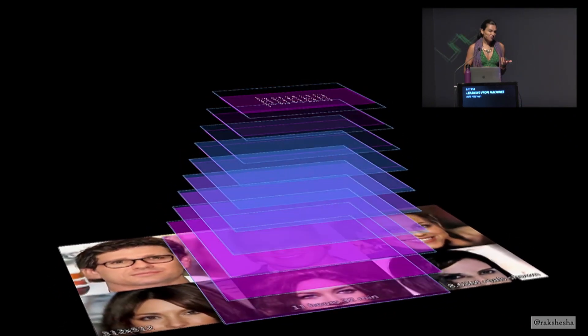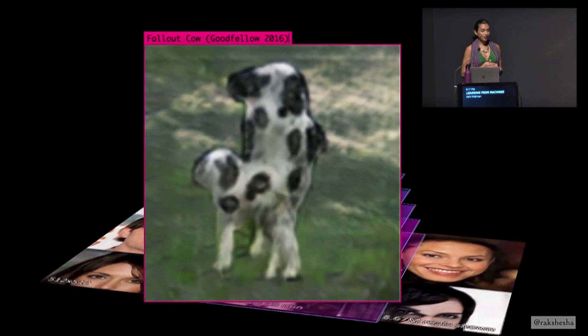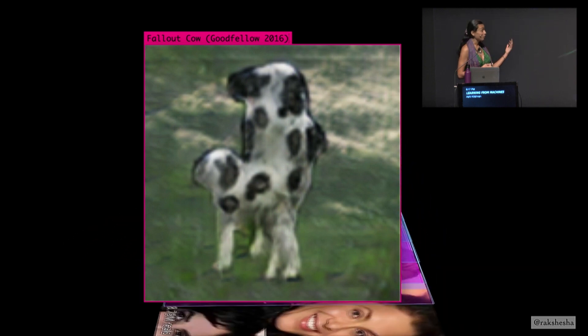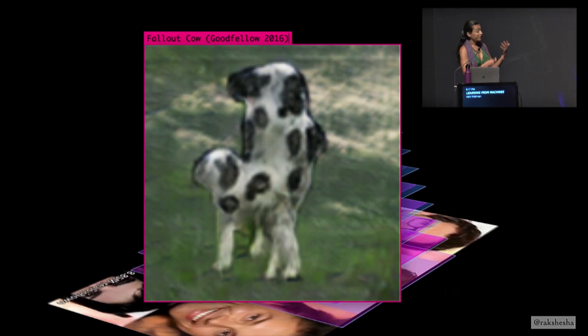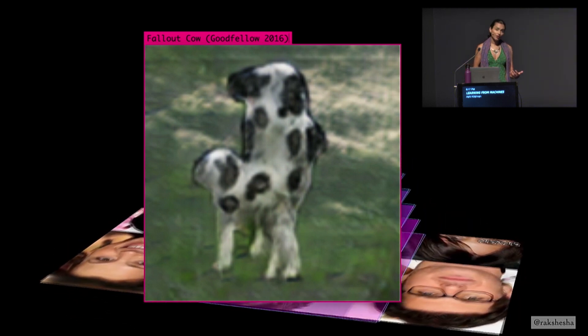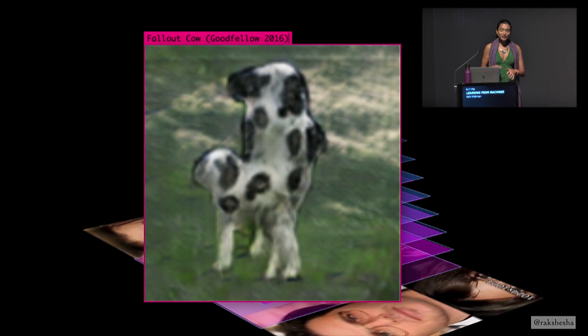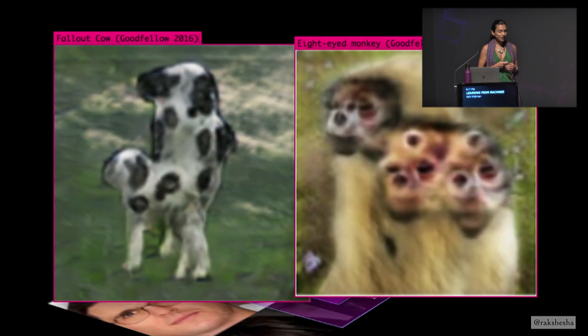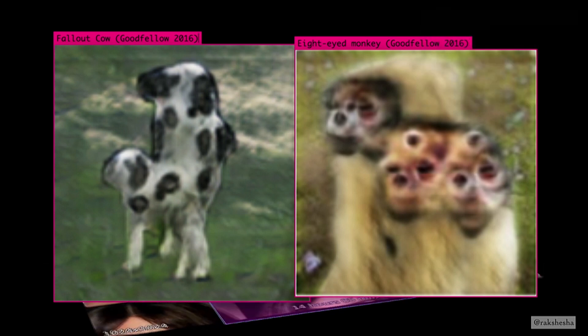GANs are not particularly great at global structure. This is a fallout cow. It is a cow with an extra body, just as you may have spent a night walking through a house that is your house, but with many extra rooms. These networks are also not super great at counting. So this monkey has eight eyes because sometimes science goes too far.